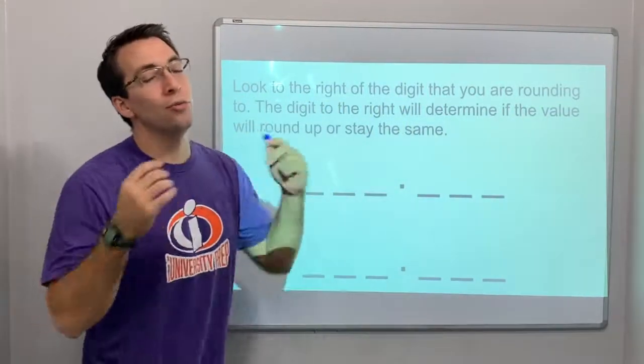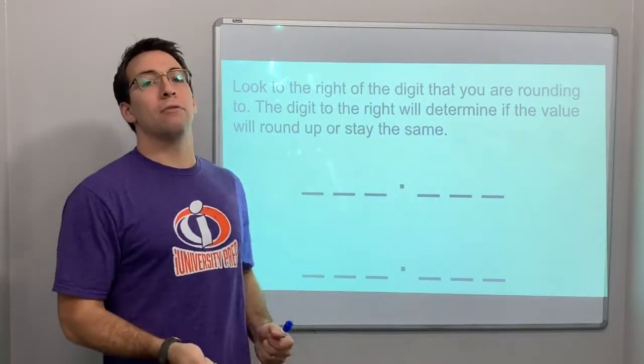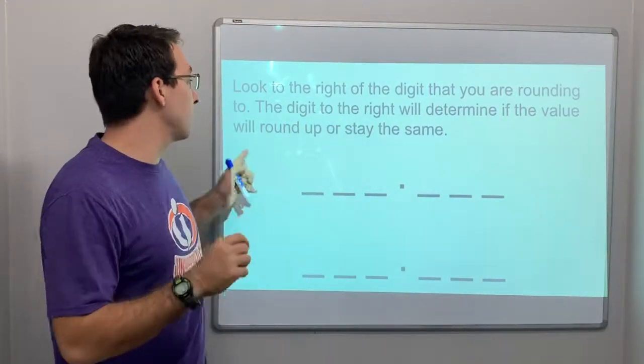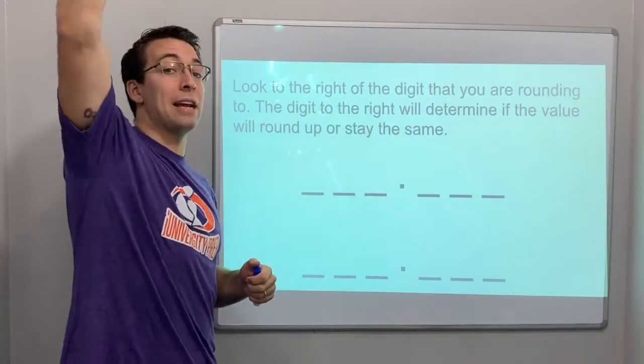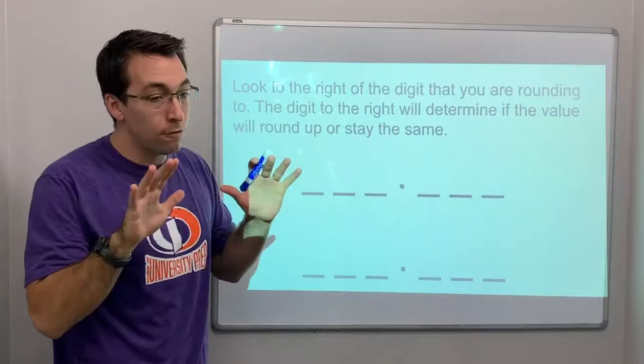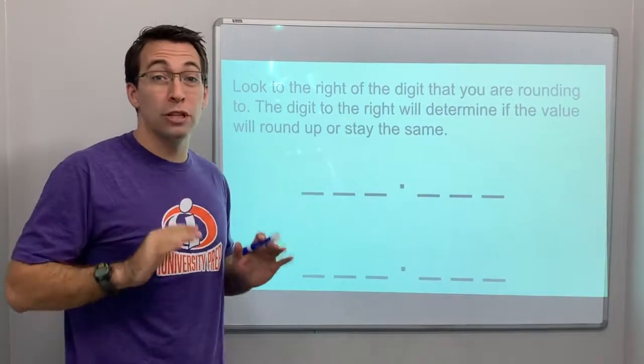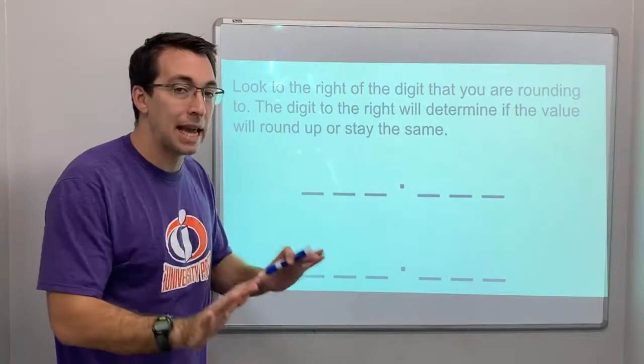So look to the right of the digit that you're rounding, right? The digit to the right will determine if the value will round up, high 5, 5, 6, 7, 8, 9 goes up, or if it's 4 or down, 4, 3, 2, 1, 0, it's just going to stay the same number.